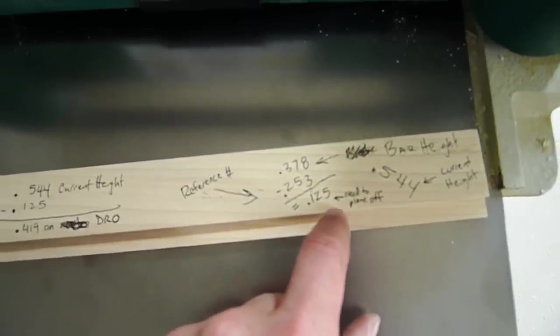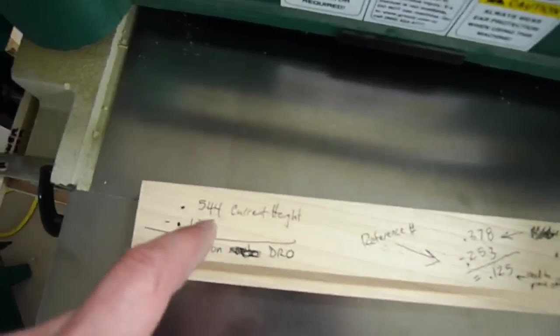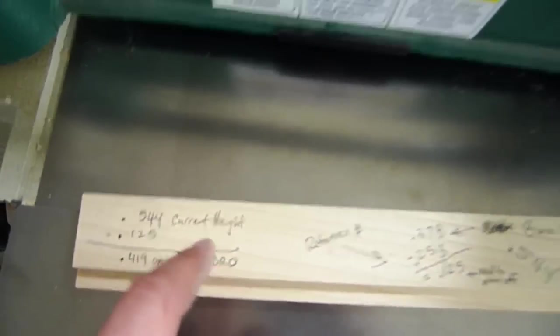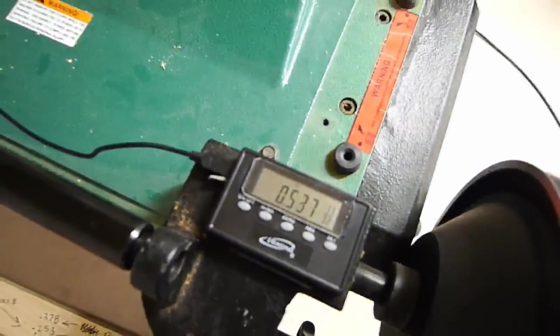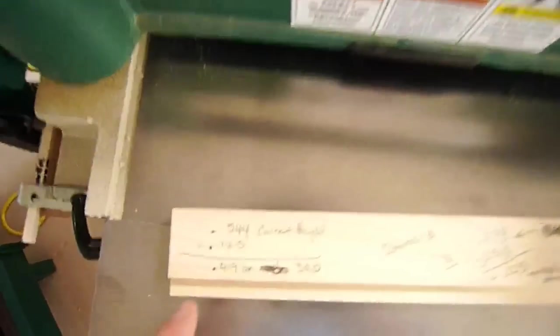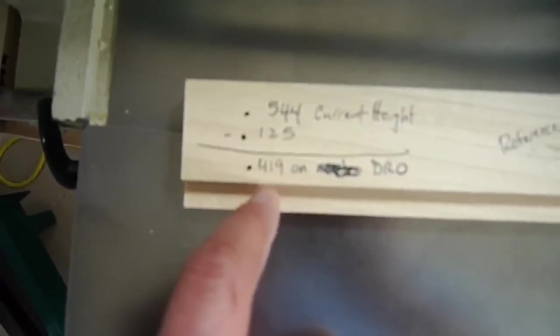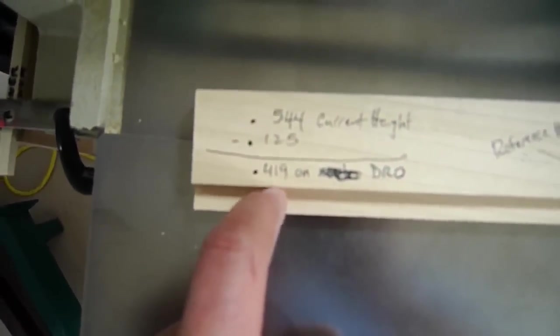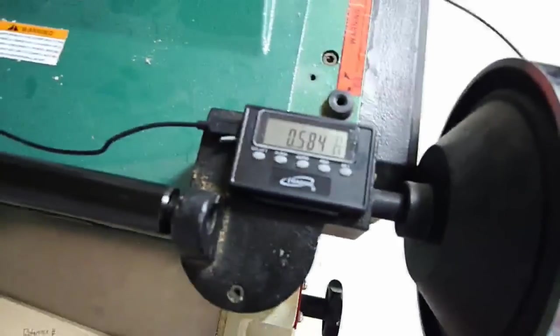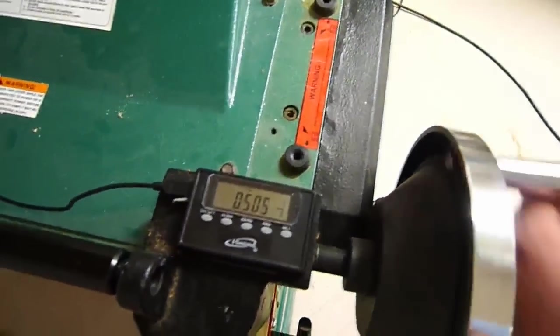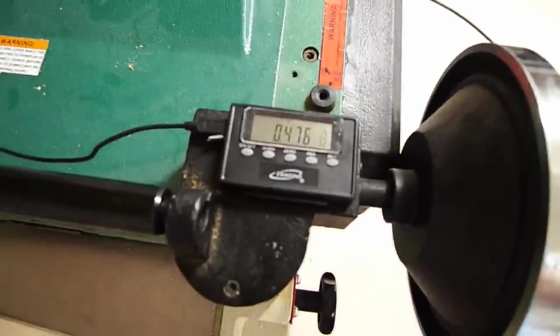That's how much we need to take off. So what we're going to do is take our original number, which was .544, and we're going to crank it back up until the reading here says .544. Actually, that doesn't matter, and then we're going to take off .125. All we care about is this number right here, the .419. So I didn't really need to crank this back up because the end result is what we need to do is plane this down until it reads .419.